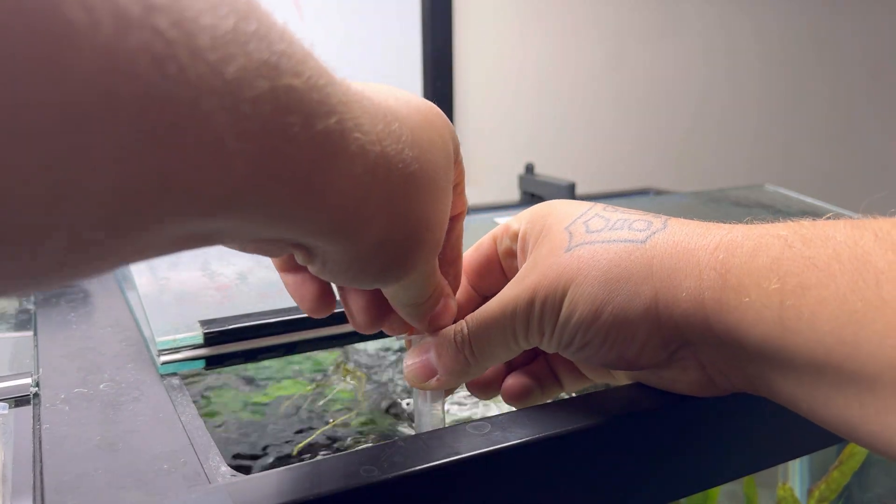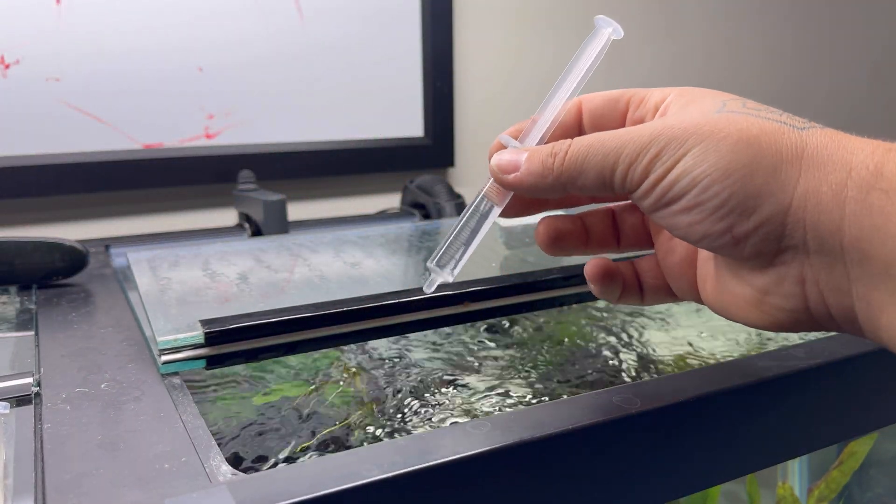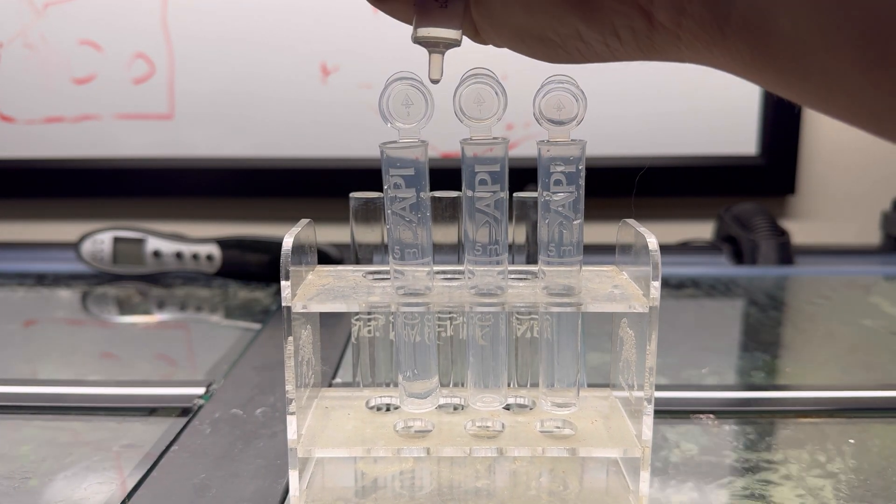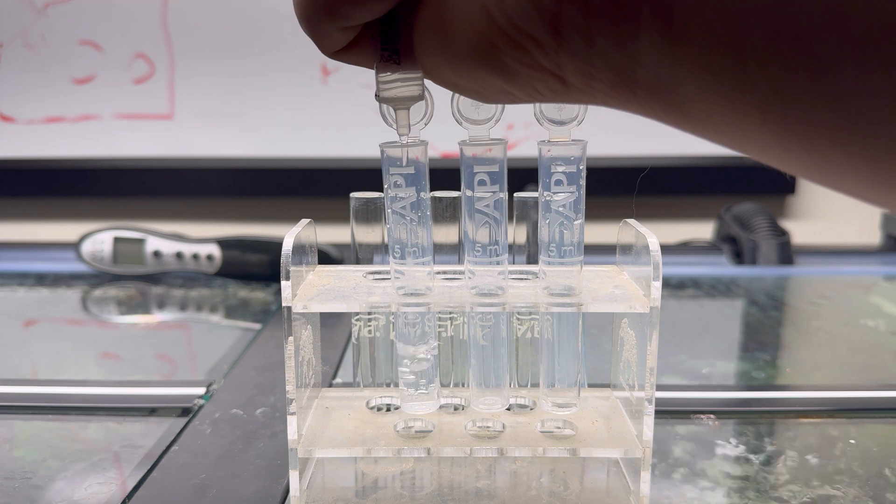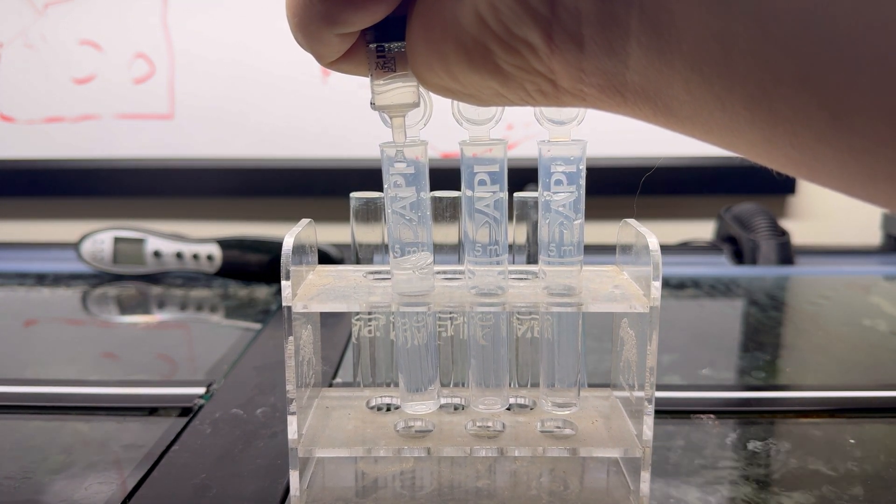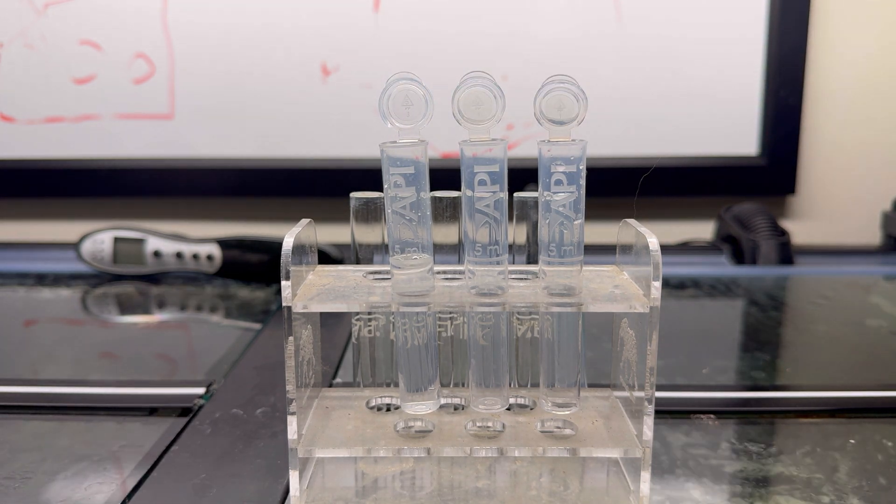This is a six-milliliter syringe which gives me a little bit more than I need to fill up one vial. Coming back to the vial, I'm going to fill up this one here to the five-milliliter mark. As you can see, drip by drip gets me to that perfect level every time.